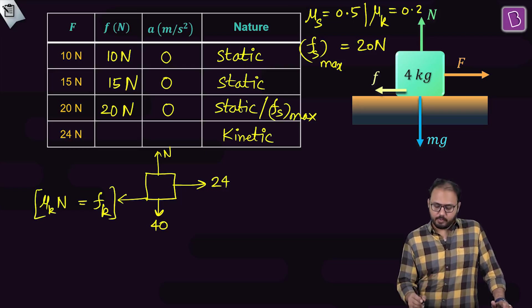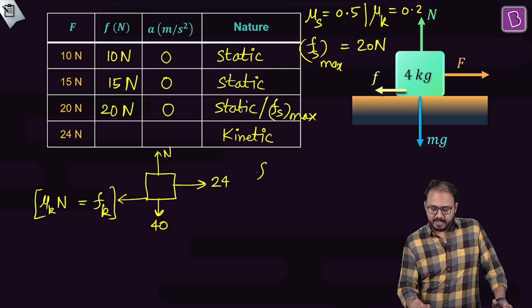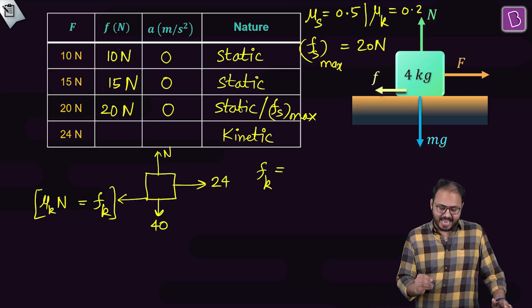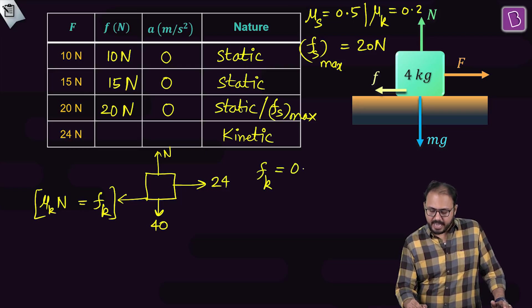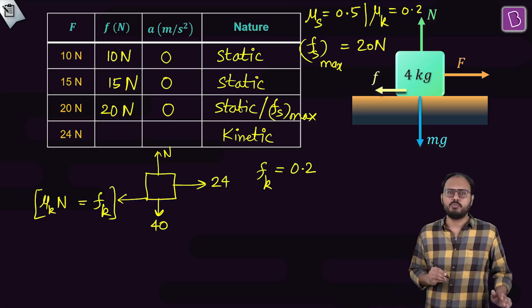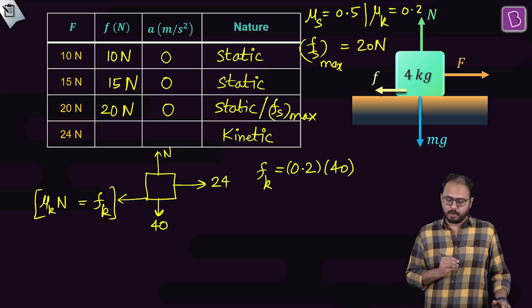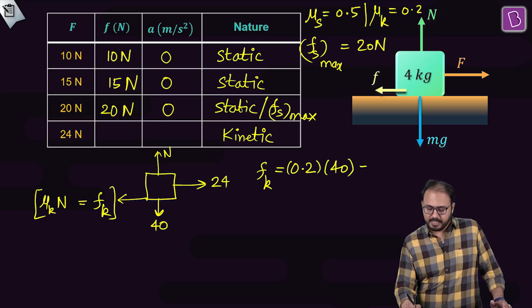Is N equal to 40? So if N is equal to 40, fk is μkN. And μk is 0.2. And 0.2 multiplied by what? 40, the normal reaction. 40 multiplied by 0.2 is 8 newton.